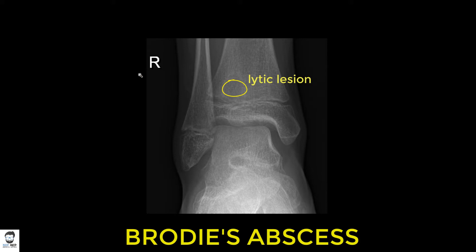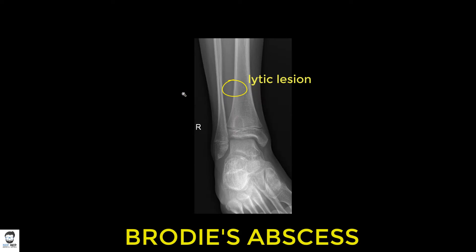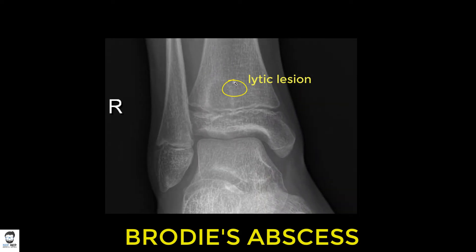This is a classic representation of a Brody's abscess. We'll be discussing what Brody's abscess is, how it looks on x-rays and MRI. We'll start with the imaging and then go into a detailed lecture. This is how it looks on the anteroposterior view and the mortise view of the x-ray.